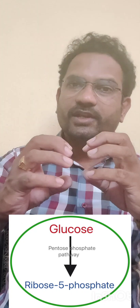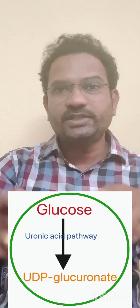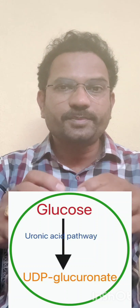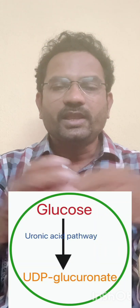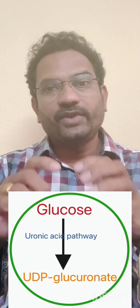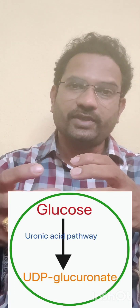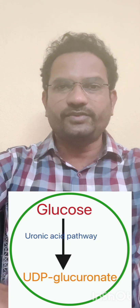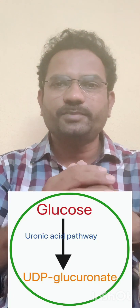Glucose can also be oxidized in the liver as glucuronic acid. This is called the uronic acid pathway. This glucuronic acid pathway is an important detoxifying pathway — it is part of phase two metabolism, where glucuronic acid combines with metabolites and they are excreted out of the body. This happens in the liver and comes under glucose oxidation pathways.